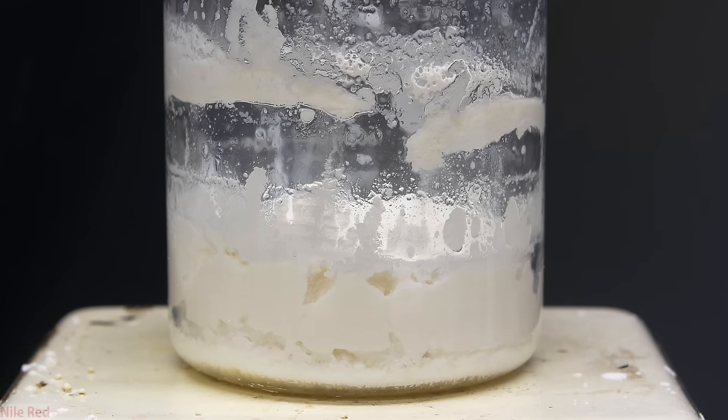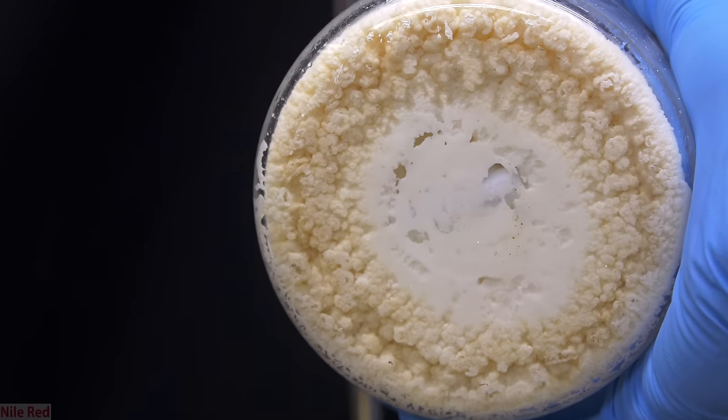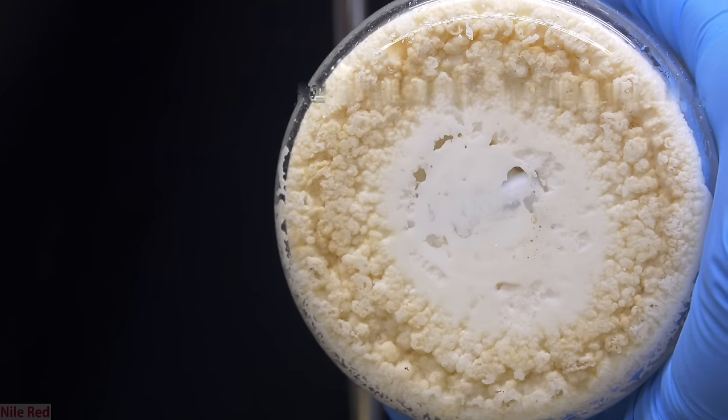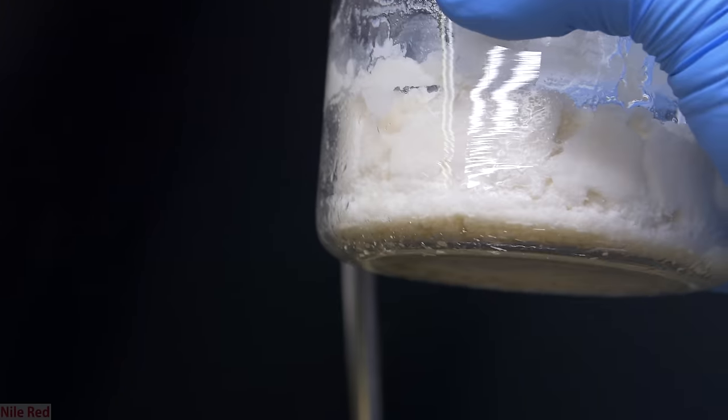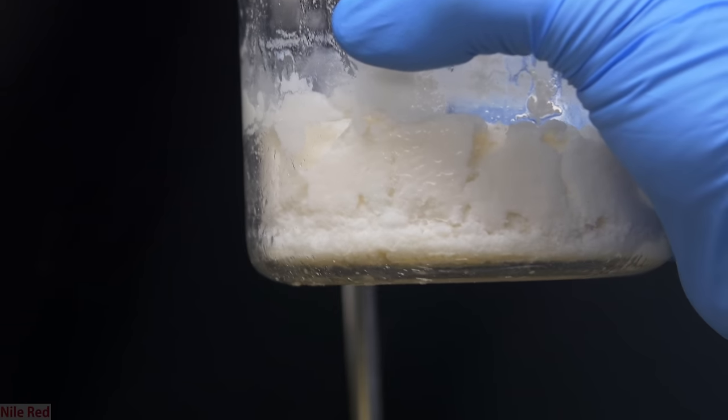Once the amount of water decreases to a certain point that it can't contain the calcium acetate, everything's going to crash out, and you really need to take it off the hot plate when this happens. I didn't take it off right away, and if you look at the bottom, it started to turn brown a little bit because the impurities in the calcium acetate started to burn on the hot plate.